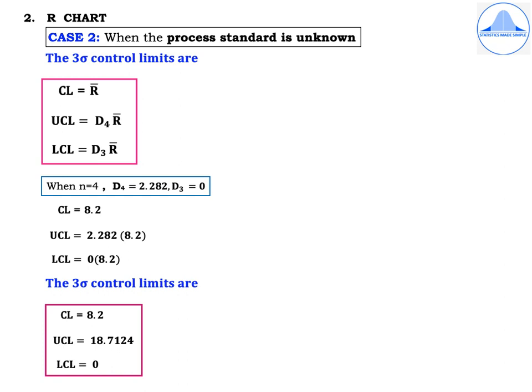For the R chart (Case 2, process standard unknown), the three-sigma control limits are: CL = R-bar, UCL = D₄·R-bar, LCL = D₃·R-bar. When n = 4, D₄ = 2.282 and D₃ = 0 from tables. Substituting: CL = 8.2, UCL = 2.282 × 8.2 = 18.7124, LCL = 0 × 8.2 = 0.